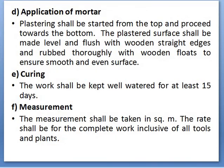Application of mortar: the plastering surface shall be made level and flush with wooden straight edges and rubbed thoroughly with wooden floats to ensure smooth and even surfaces. Nowadays aluminum strips are also used. Curing: about 15 days. Measurement: plastering is measured in square meters because the thickness of plastering is only 10 to 12 mm, so thickness is very small.